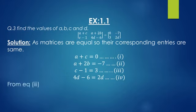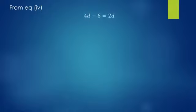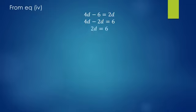From equation 3: c - 1 = 3, so c = 3 + 1 = 4. From equation 4: 4d - 6 = 2d. Moving 2d to the left side and -6 to the right side: 4d - 2d = 6, which gives 2d = 6. Dividing both sides by 2, the result is d = 3.